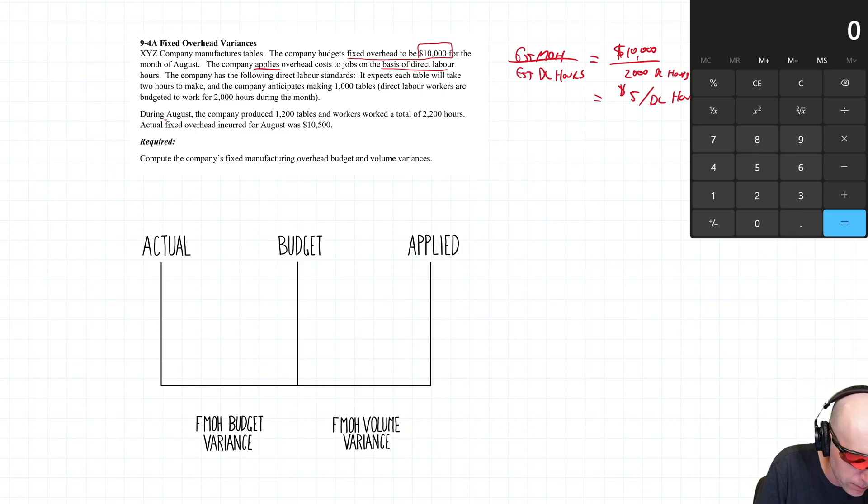During August, the company produced 1,200 tables and the workers worked a total of 2,200 hours. Actual fixed overhead was $10,500.